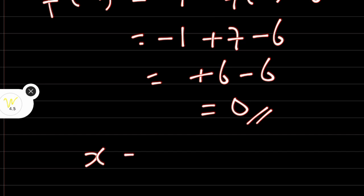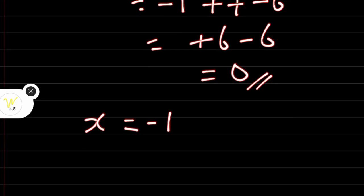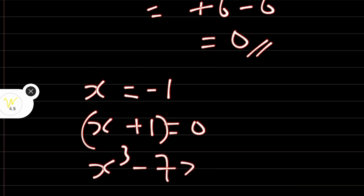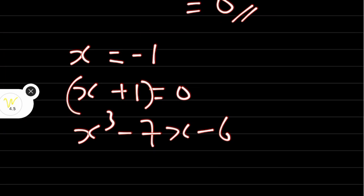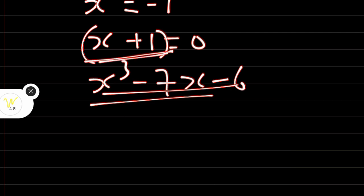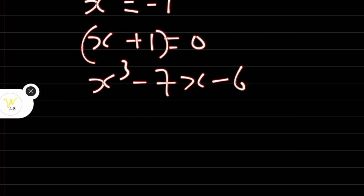It shows that x is equal to minus 1. Therefore, x plus 1 is equal to 0, meaning x plus 1 is one of the factors of this cubic equation x cubed minus 7x minus 6. A factor divides a given expression without any remainder. So we can use this factor to reduce this polynomial or cubic equation to a simpler equation. Let's divide this polynomial by x plus 1, since x plus 1 is its factor.